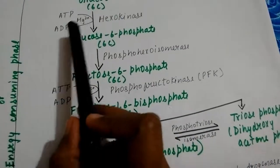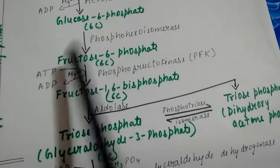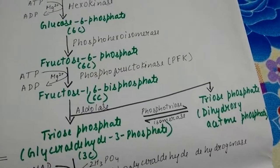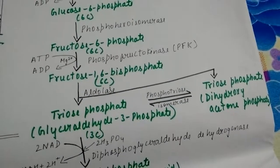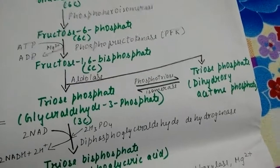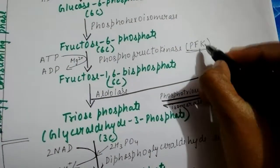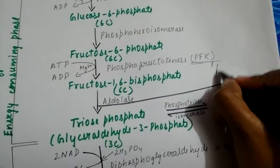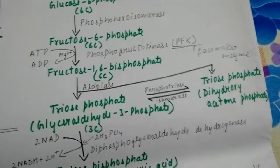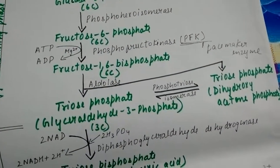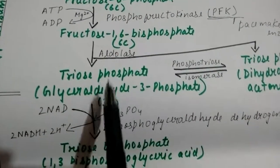One ATP is converted into ADP here. Then glucose-6-phosphate is converted into fructose-6-phosphate in the presence of the enzyme phosphohexoisomerase — fructose-6-phosphate is an isomer of glucose-6-phosphate, so they are interconvertible. Then fructose-6-phosphate is converted into fructose-1,6-bisphosphate in the presence of PFK — phosphofructokinase. PFK is called the pacemaker enzyme. Here again one molecule of ATP is utilized, and this occurs in the presence of Mg²⁺ as a cofactor.